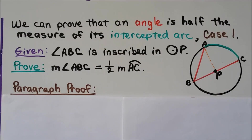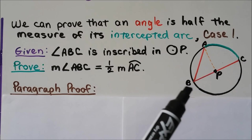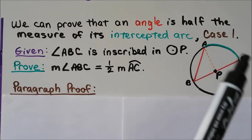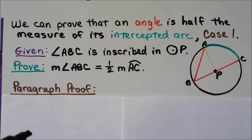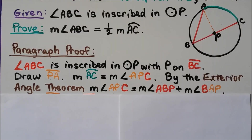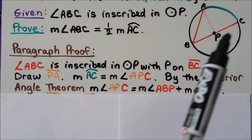We can prove that an inscribed angle is half the measure of its intercepted arc. This is case one. We have angle ABC where vertex B is on the circle and arc AC is the intercepted arc. Given that angle ABC is inscribed in circle P, we need to prove that the measure of angle ABC equals half the measure of arc AC. We'll do a paragraph proof.